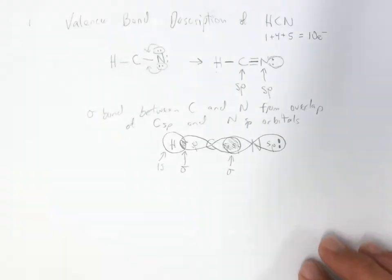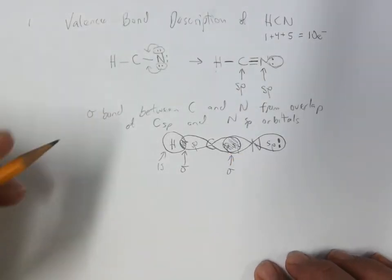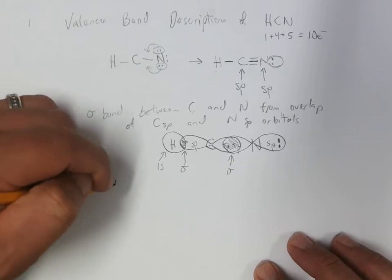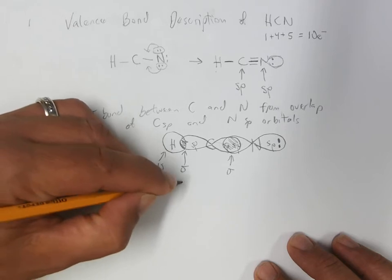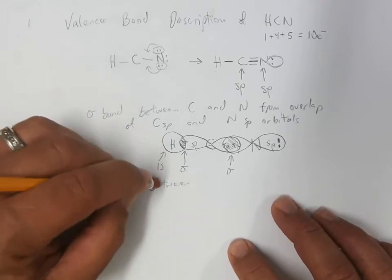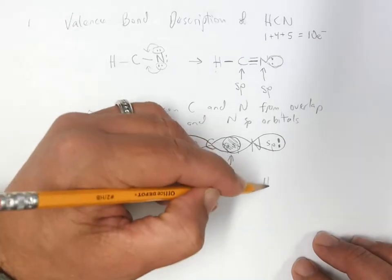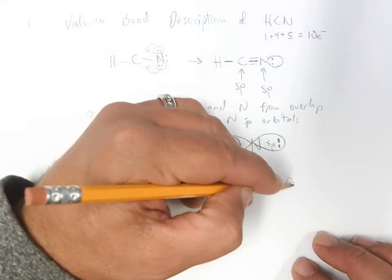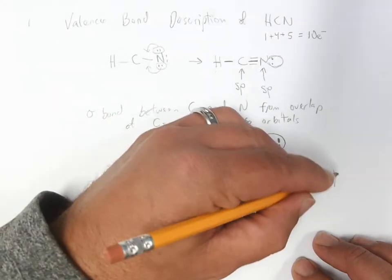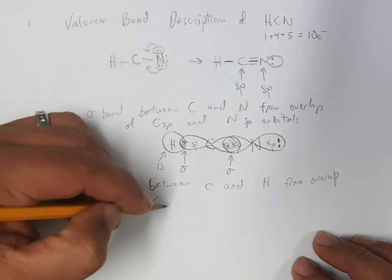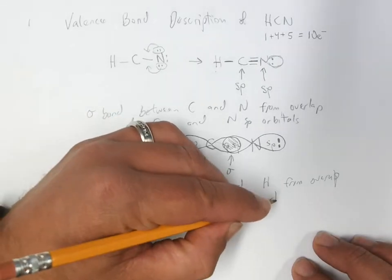So that's a real key for where this sigma bond comes from, the overlap of sp orbitals. And then there's also a sigma bond between carbon and hydrogen from the overlap of the carbon sp and hydrogen 1s orbitals.